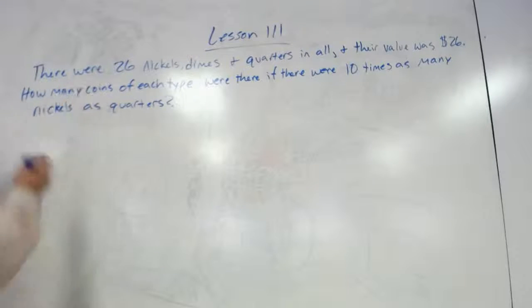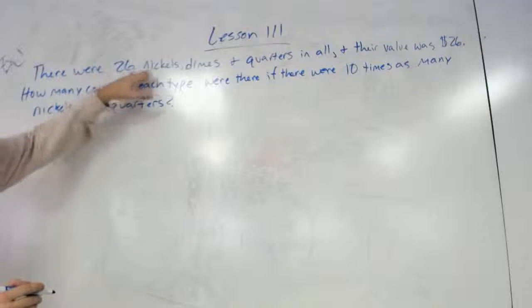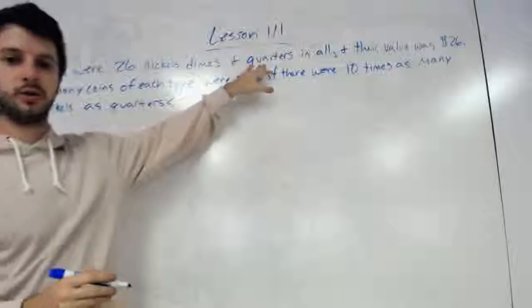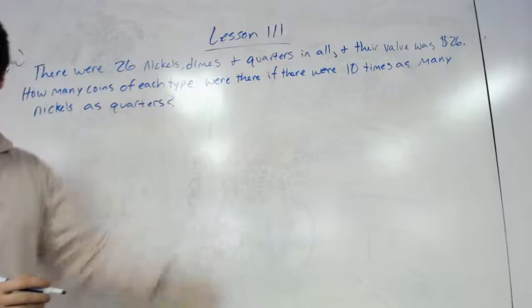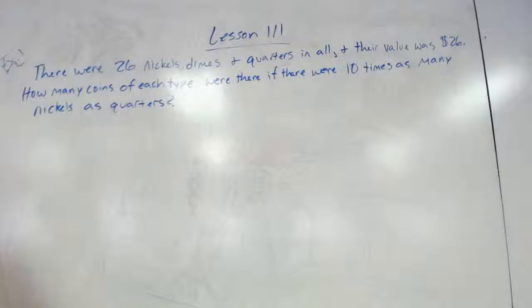Example one you should be able to get the concept. It says there were 26 nickels, dimes, and quarters in all. So let's first look at this part.